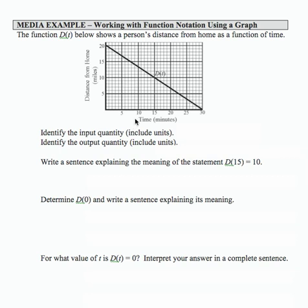Our input quantity is time in minutes, and that's reflected by the labeling on the horizontal part of the graph. Our output quantity is distance from home in miles, and that's labeled with the variable d of t. And that's indicated here on the vertical axis.